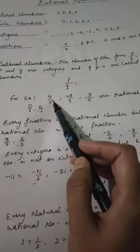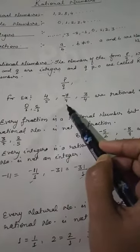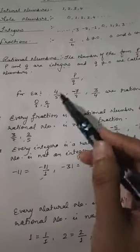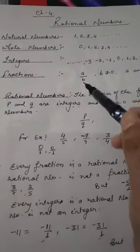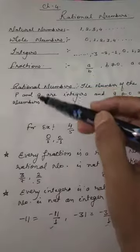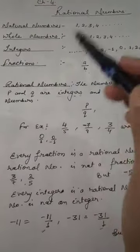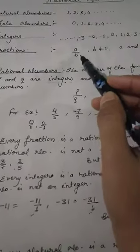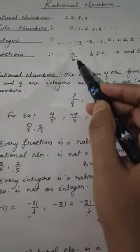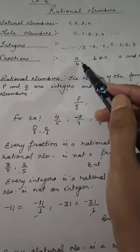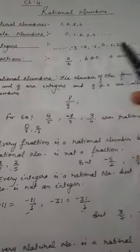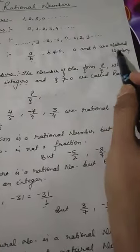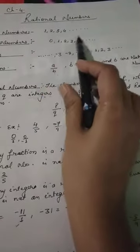For example, 4/5, −7/9, and 3/4 are all rational numbers. So what is the difference between fractions and rational numbers? Fractions can never be expressed in negative form because fractions represent a part of a whole. Also, the numerator and denominator in fractions are natural numbers, and natural numbers are not negative.